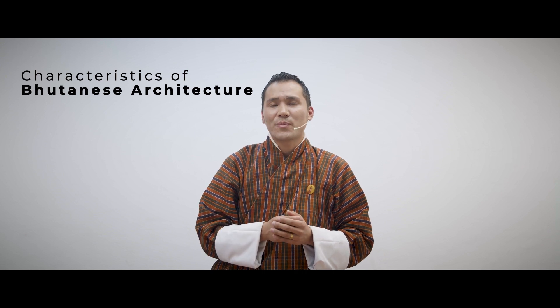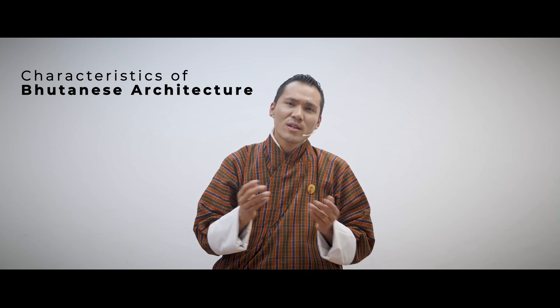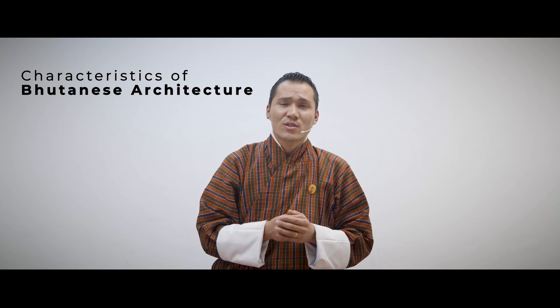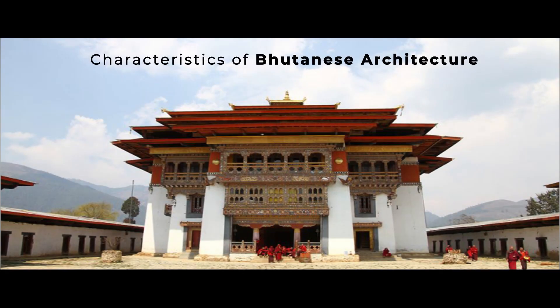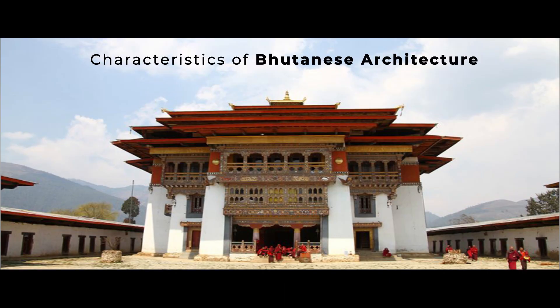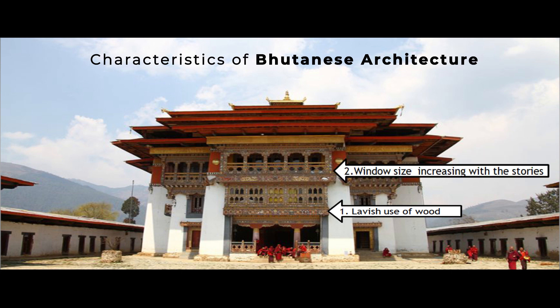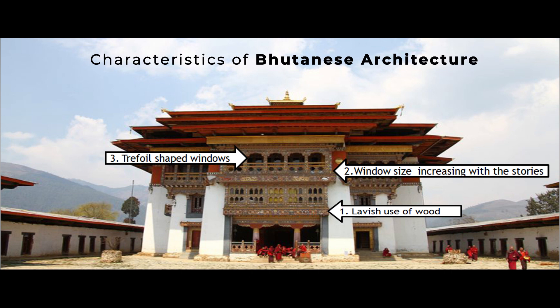Now let us look at the characteristics of Bhutanese architecture. In Bhutanese buildings we find a lavish use of wood. The window size increases with the story level, windows are trefoil in shape, and the walls are sloped and whitewashed. These are some of the key features of Bhutanese architecture.